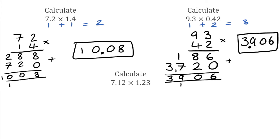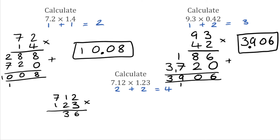For our very last question we've got 7.12 multiplied by 1.23. Two decimal places in the first number and two decimal places in the second number, which means our answer is going to be to four decimal places. We do 712 multiplied by 123: 3 times 2 is 6, 3 times 1 is 3, 3 times 7 is 21. Moving to the 2 with a placeholder: 2 times 2 is 4, 2 times 1 is 2, 2 times 7 is 14. Moving to the 1 with two placeholders: 1 times 2 is 2, 1 times 1 is 1, 1 times 7 is 7.